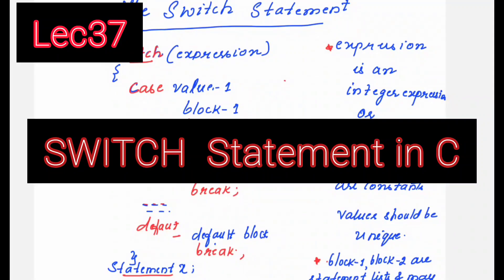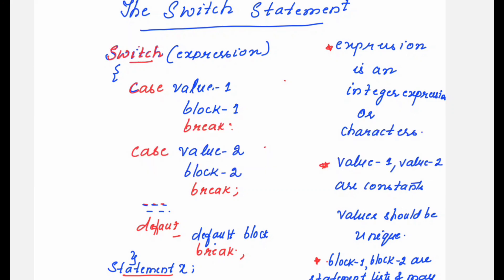Hello viewers, welcome to this video lecture series on C programming. In this session I shall be explaining the switch statement. The switch statement comes under the category of conditional and branching statements. In my previous video sessions I explained the simple if statement, if-else statement, nested if-else statements, and else-if ladder. The switch statement is the last type in the conditional and branching statement category.